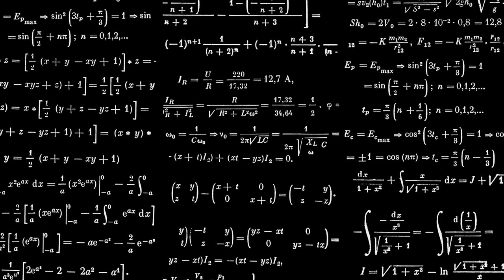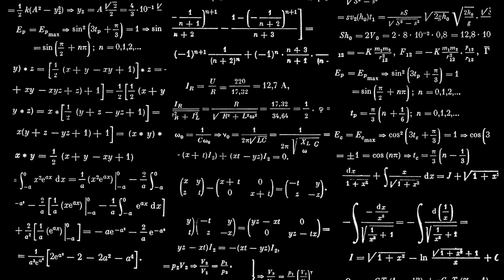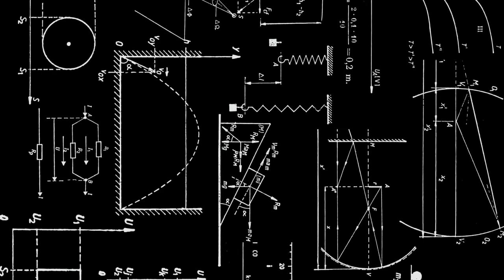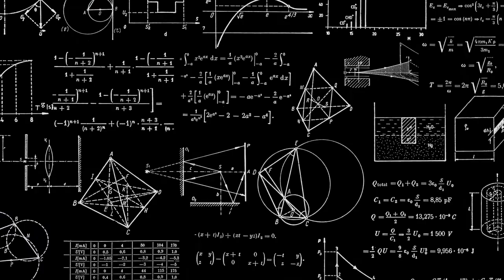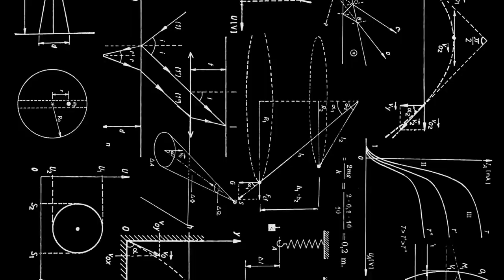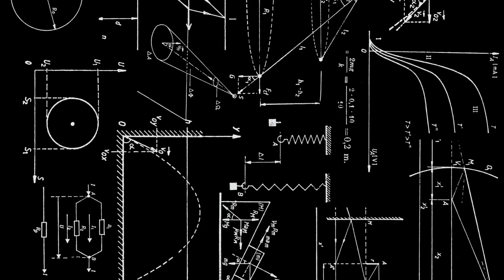By assigning a number of successive values to X and finding the corresponding values of Y, we can readily see that the equation represents a curve with a minimum. The values are: X equals 0, Y equals 7; X equals 1, Y equals 4; X equals 2, Y equals 3; X equals 3, Y equals 4; X equals 4, Y equals 7; X equals 5, Y equals 12.